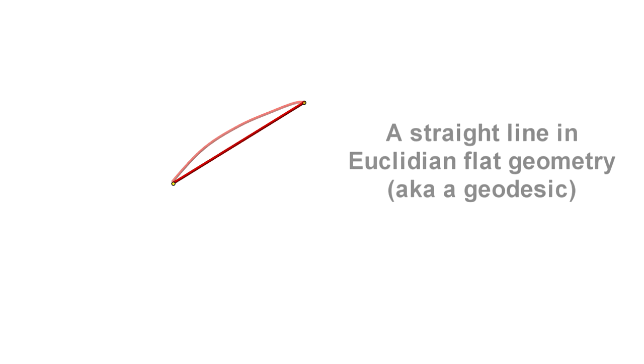The shortest distance between two points is the line with the least curves. In Euclidean geometry, this is a straight line.